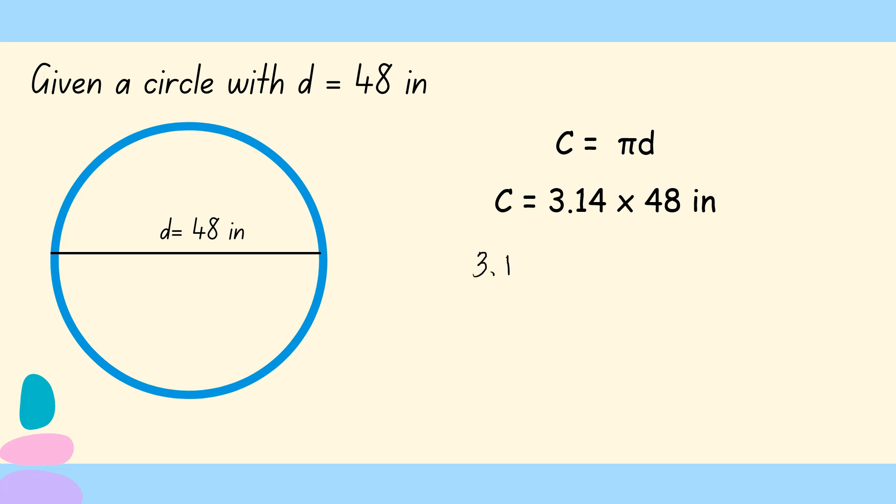So 3.14 times 48. 8 times 4 equals 32, carry 3. 8 times 1 equals 8 plus 3 equals 11, carry 1. 8 times 3 equals 24 plus 1 equals 25. Next 4 times 4 equals 16, carry 1. 4 times 1 equals 4 plus 1 equals 5. 4 times 3 equals 12. Now, let us add the partial product. 2, 7, 10, 5, then 1.